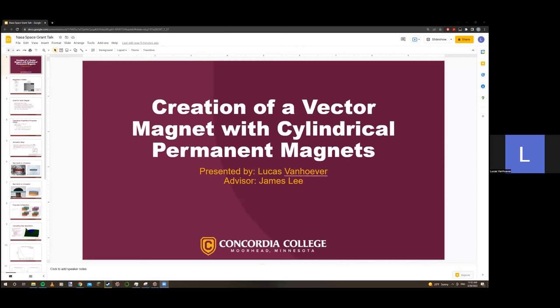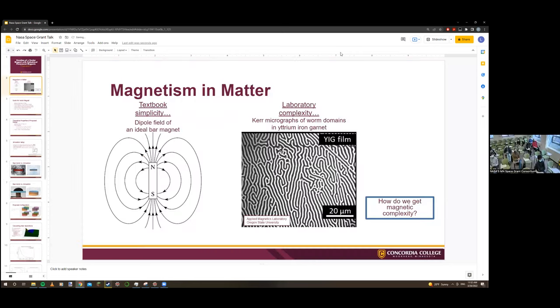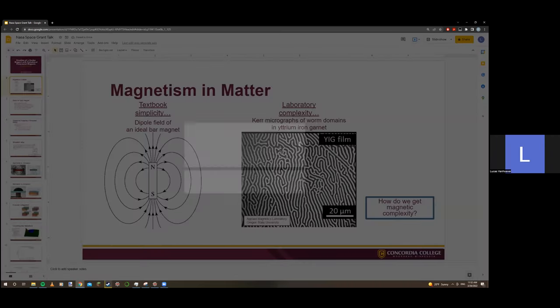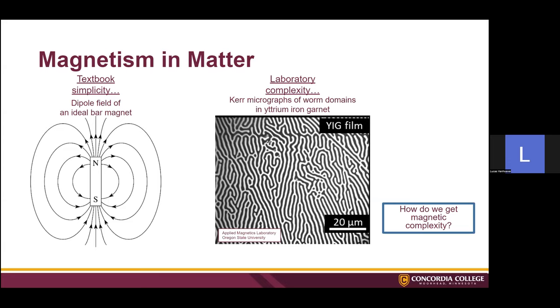I actually left my box at the college and I'm on my desktop, so sorry about that. Okay, so my advisor was James Lee, and my project was the creation of a vector magnet with cylindrical permanent magnets. The question of why make a vector magnet is to analyze the magnetic properties of materials.